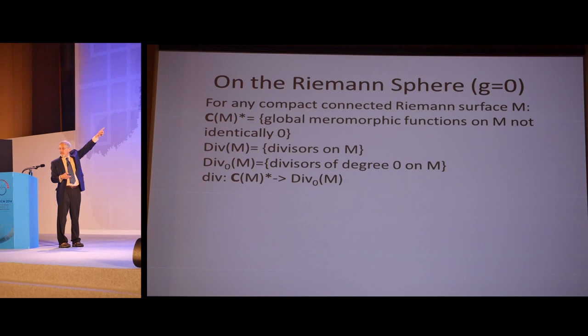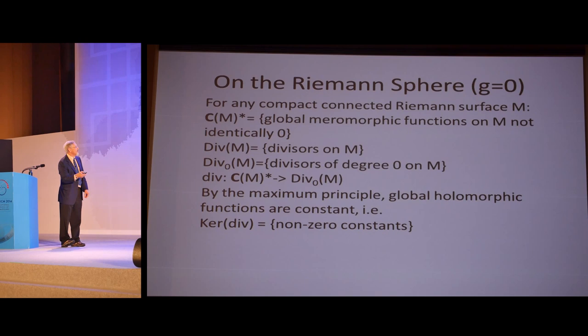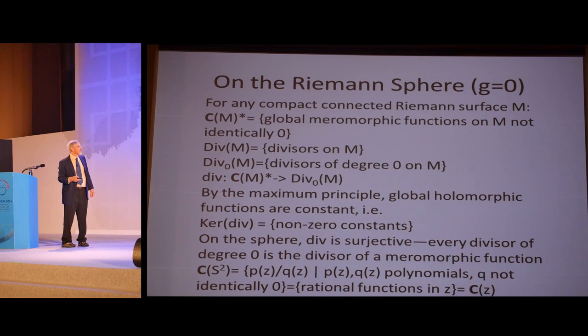A little notation. C(M)* is the global meromorphic functions on M except the one that's identically zero. That function doesn't have a divisor. Div(M) is the set of divisors. Div₀(M) is the ones of degree zero. We have that C(M)* maps by this div map to divisors of degree zero. The kernel of this is just the non-zero constants. On the sphere, this map is surjective. We know this since in most complex analysis courses you have quotients of polynomials. Those don't look like they have the same number of zeros and poles if the degrees of P and Q are different, but the point at infinity takes care of that.